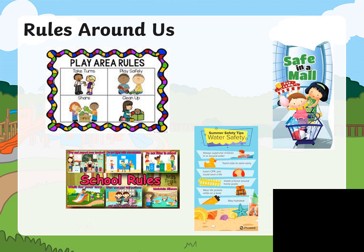There are also rules at the beach. We never go to the beach or to the pool alone without our parents. We always need our floaters or life jackets. We always have to drink water while we are on the beach to protect us from the sun. We need to use sunscreen to protect our skin. We never go far away while swimming in the sea, and we always make sure our parents are close to us — we can see them and they can see us.